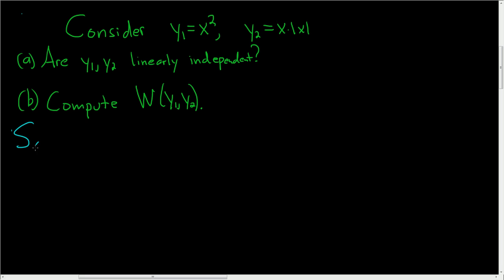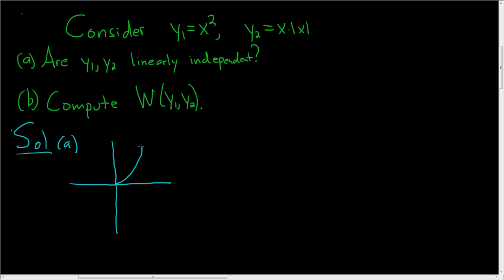Let's go ahead and do part A first. So solution to A. Well, the answer is yes, but why? What we'll do is just look at the graphs of each of these functions. So this will be the graph of x squared. This is a parabola, so it looks something like this. So y1 is equal to x squared.